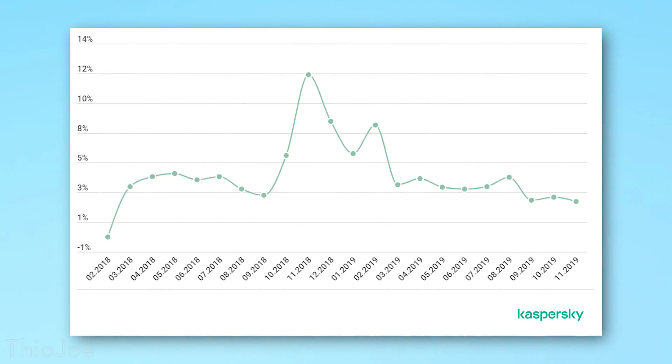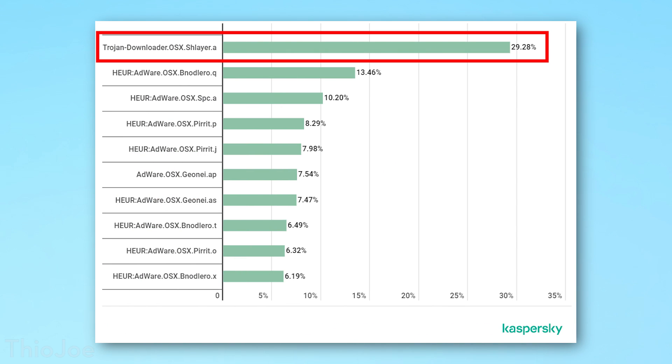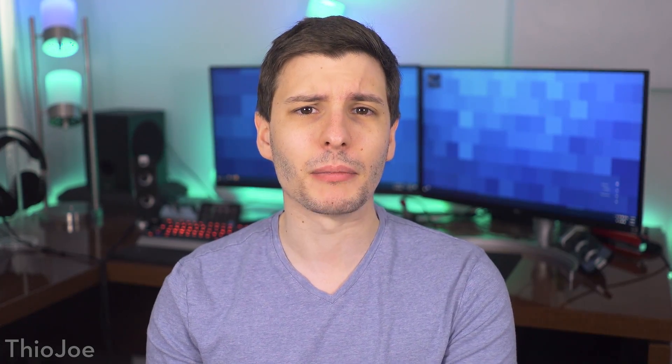According to a recent report by the antivirus company Kaspersky, one Trojan called the Shlayer has infected around 10% of all Macs they monitor, and it accounts for nearly a third of all the infections on Macs. Which is absolutely insane — if you're using a Mac right now there's a slight chance yours is infected right now.